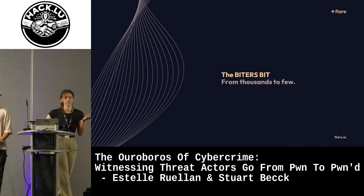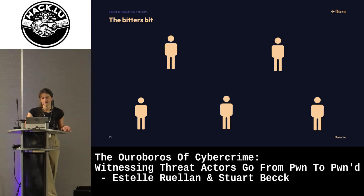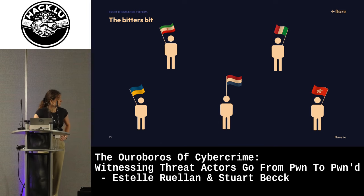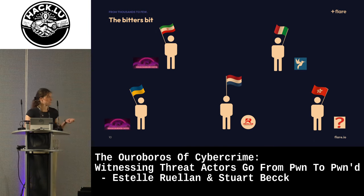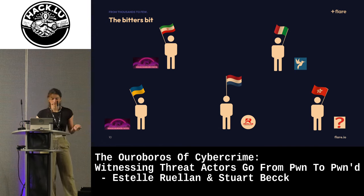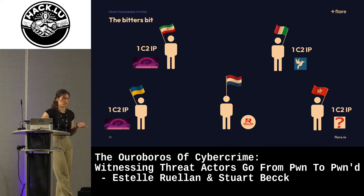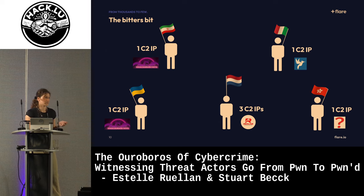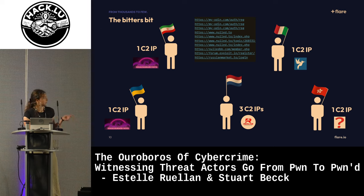We went from thousands of stealer logs down to just five that we flagged as having accessed at least one known C2 server. These five came from Ukraine, Iran, the Netherlands, Italy, and Hong Kong — the location based on the geo-set of the infected device. Two were infected by the Radamanthys infostealer, one by Luma, another by Redline, and the last one's family we couldn't determine. Four had accessed at least one known C2 server IP, and the last one had accessed three different C2 server IPs. They all had at least one credential access to cybercrime forums, which were either myodin.com, neural.io, RussianMarket, and exploit.in.